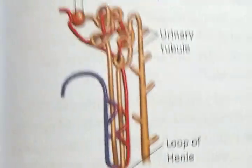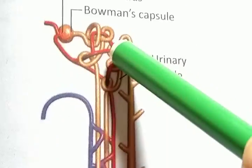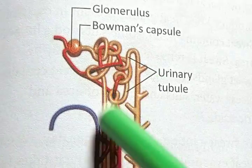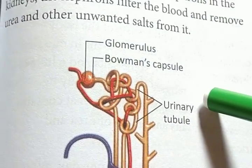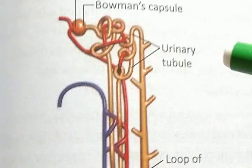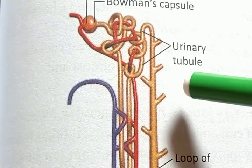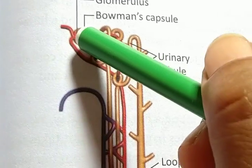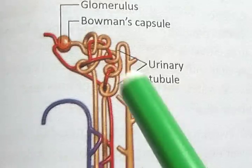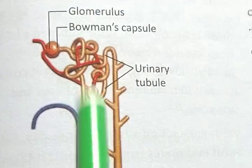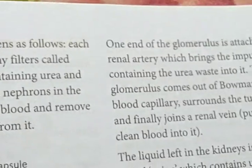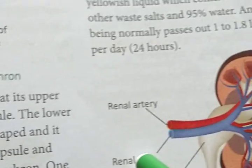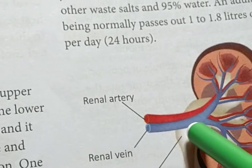Once again: the cup-like shape at the upper end of the nephron is the Bowman's capsule, and the lower end is the tubular urinary tubule. The other end of the Bowman's capsule is connected to the urine-collecting duct — the ureter. The Bowman's capsule consists of blood capillaries called the glomerulus (plural: glomeruli). One end is attached to the renal artery bringing impure blood, and the other end is attached to the renal vein surrounded by blood capillaries.